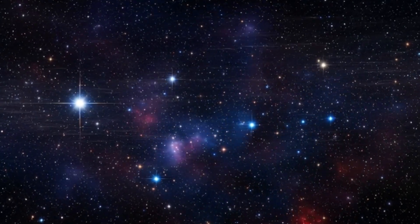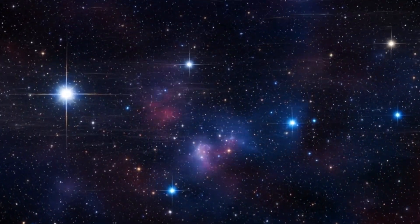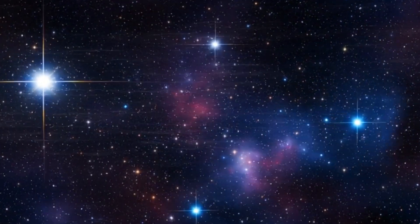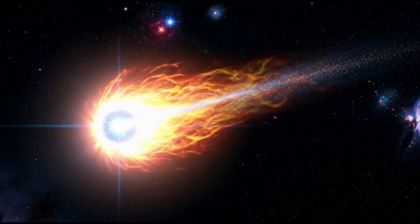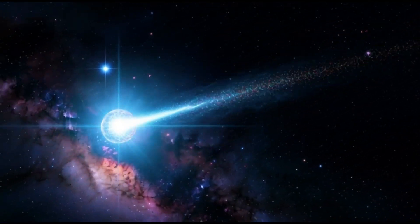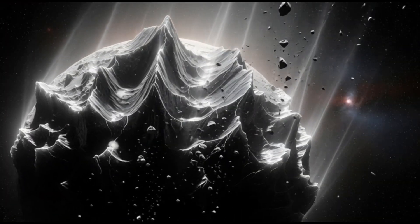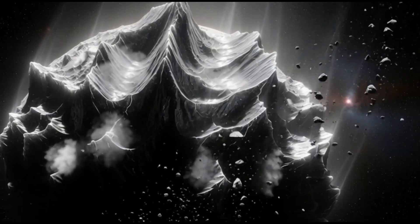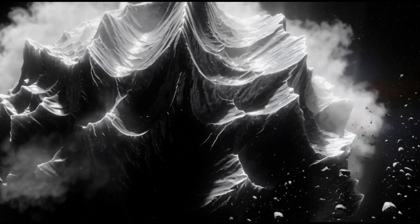Something enormous from beyond our star system just cut across the solar system, and it's not behaving like anything we've seen before. We gave it a name, 3i Atlas.